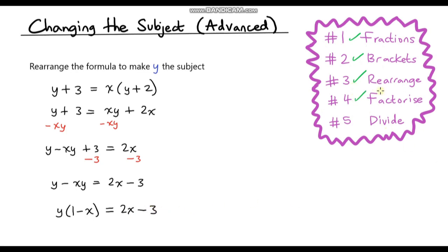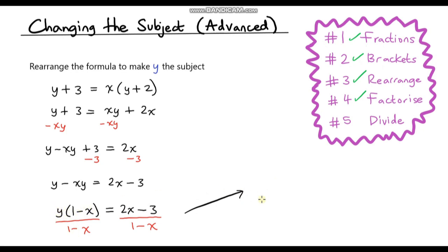We've done the factorising. Now for our final step to get y on its own, we need to divide by 1 minus x. So divide both sides by 1 minus x. These two terms cancel on the left so we'll just be left with y, and on the right hand side we copy everything out. So our final answer is y equals 2x minus 3 all over 1 minus x.